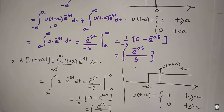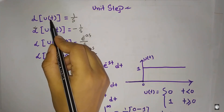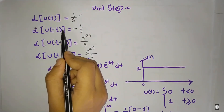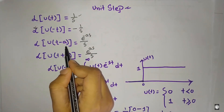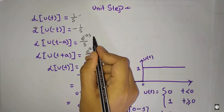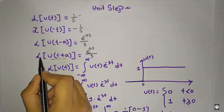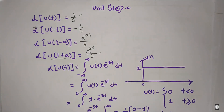Let us summarize. The unit step function u of t has Laplace transform 1 by s. The folded version u of minus t has Laplace transform minus 1 by s. U of t minus a has Laplace transform e to the power minus as by s, and u of t plus a has Laplace transform e to the power as by s. This is the simple unit step function related Laplace transform. Thanks for watching this video.